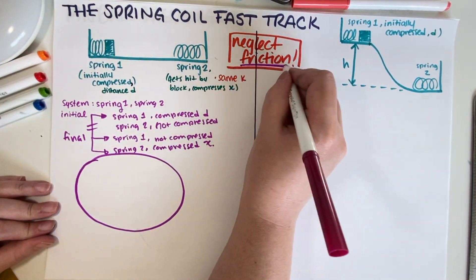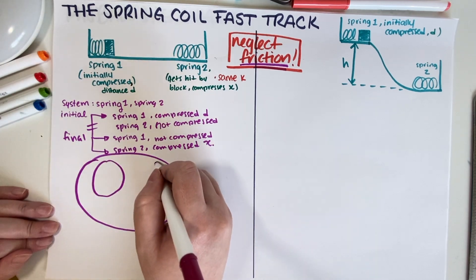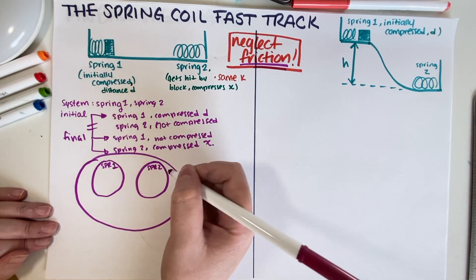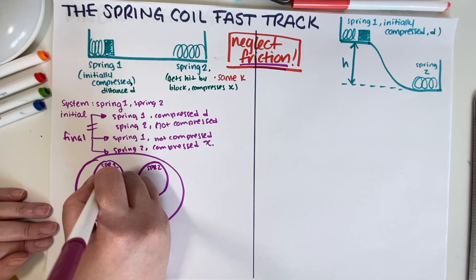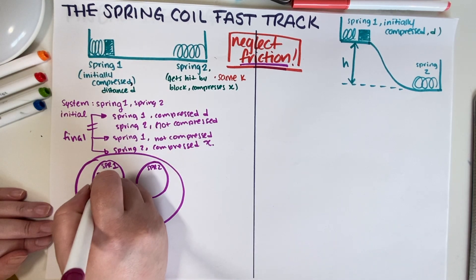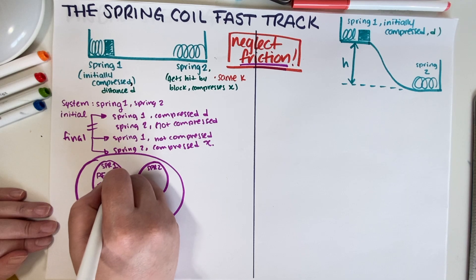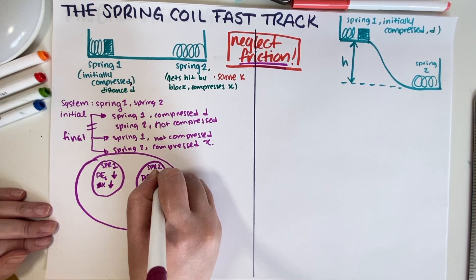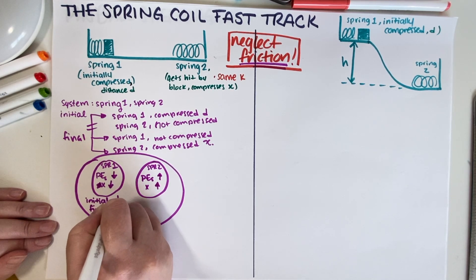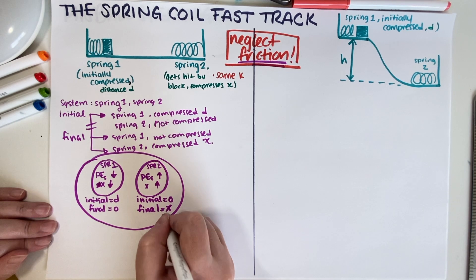This is a closed system because we have no friction. We only have two bubbles, one for each spring. The potential energy of spring one decreases — its compression goes from d down to zero. The potential energy of spring two increases — its compression goes from zero up to x. So the initial for spring one is d, final is zero; initial for spring two is zero, final is x.